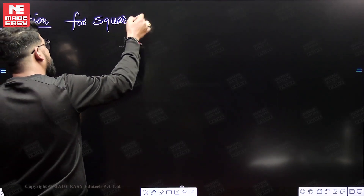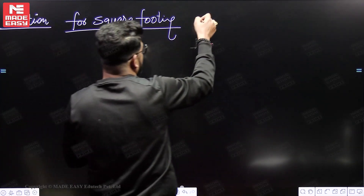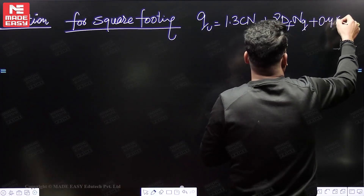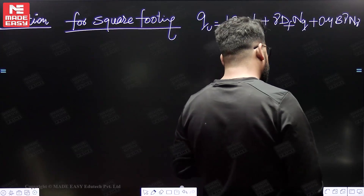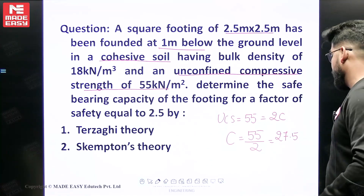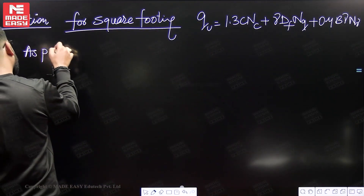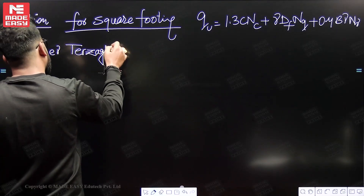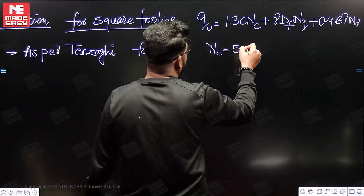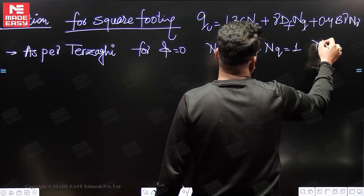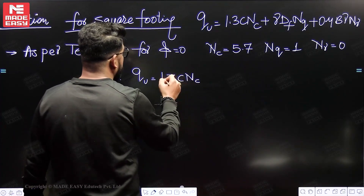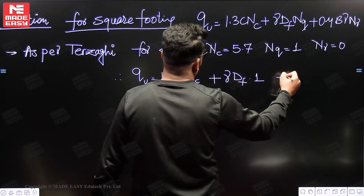For square footing using Terzaghi's theory: QU = 1.3·C·NC + γ·Df·NQ + 0.4·B·γ·Nγ. The soil is cohesive (clay), so φ = 0. As per Terzaghi, for φ = 0: NC = 5.7, NQ = 1, Nγ = 0. Therefore: QU = 1.3·C·NC + γ·Df·(1) + 0 = 1.3·C·NC + γ·Df.